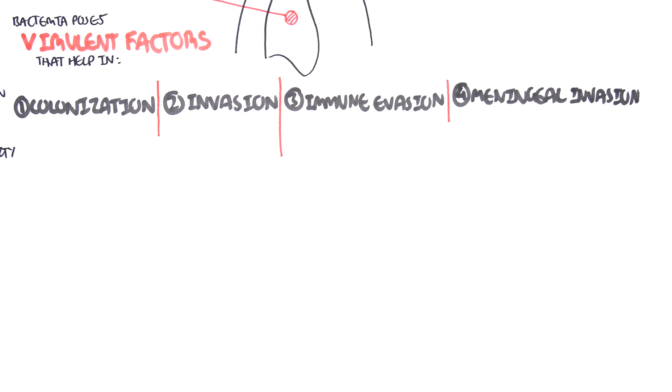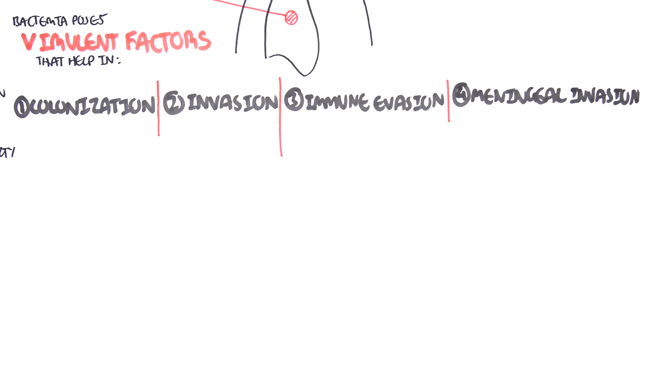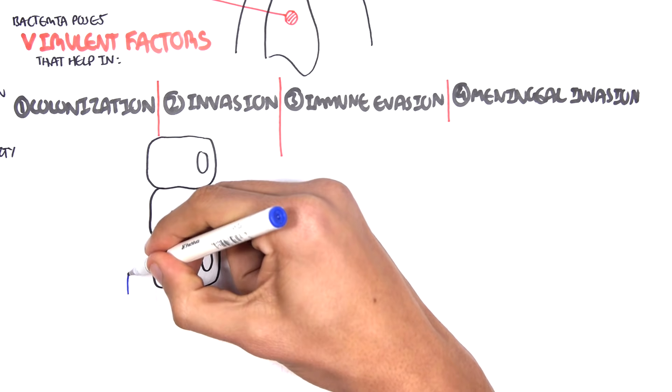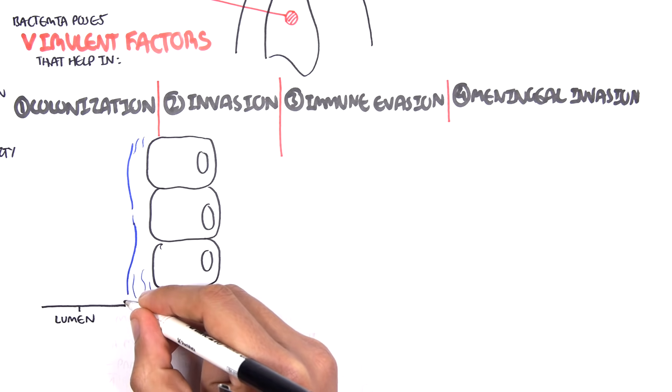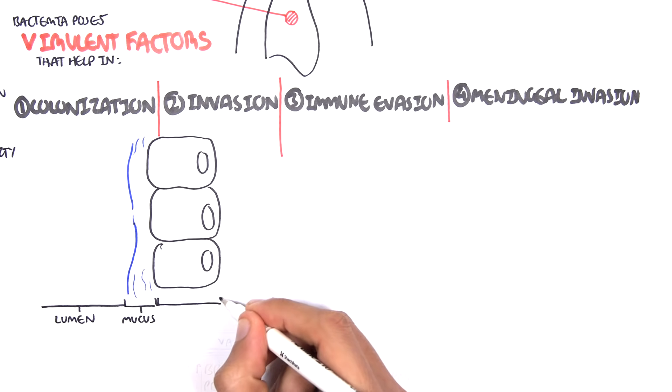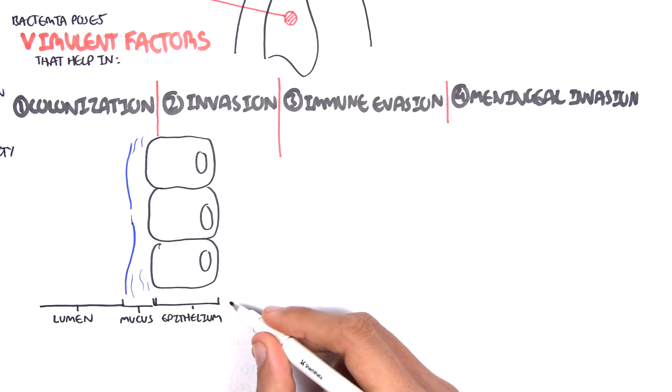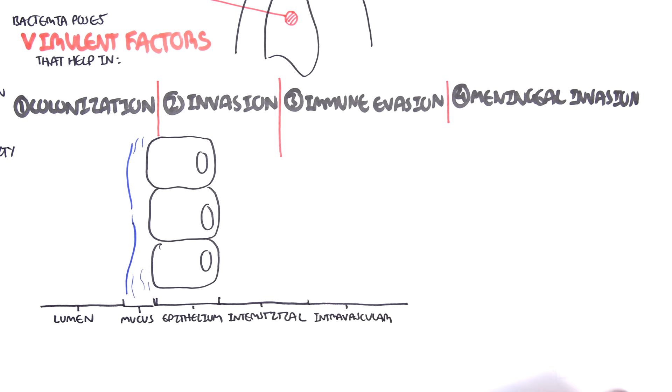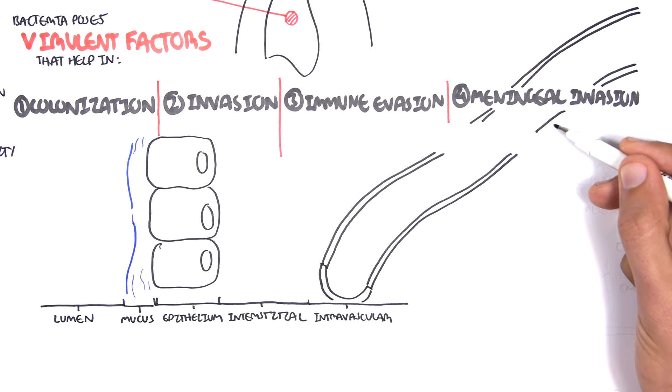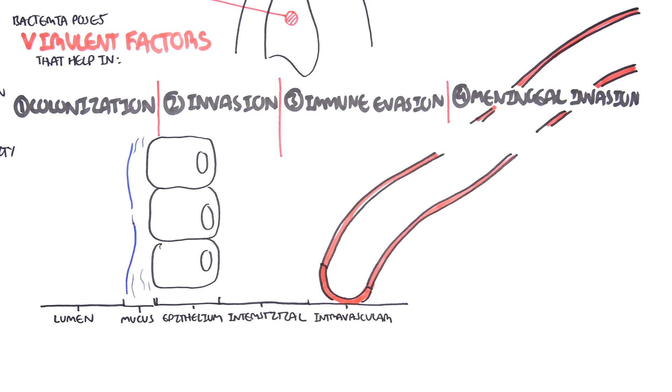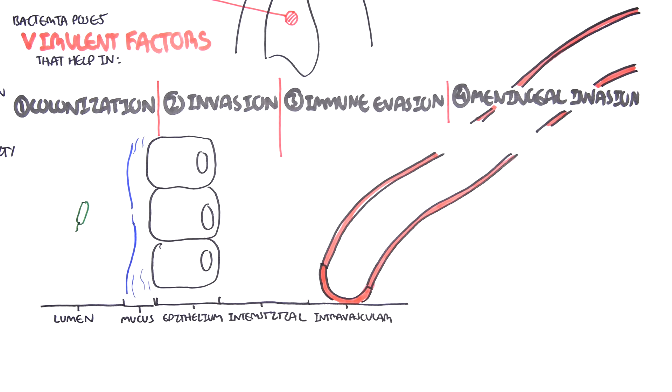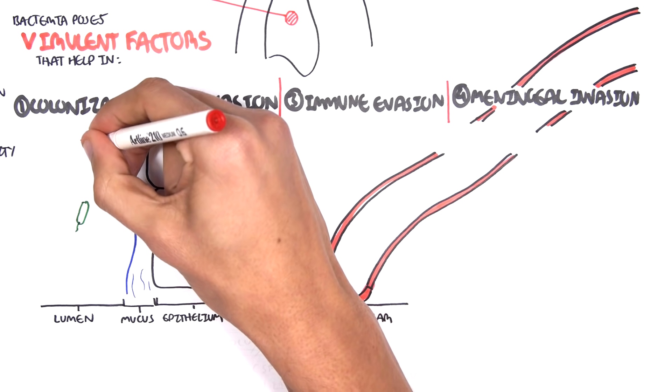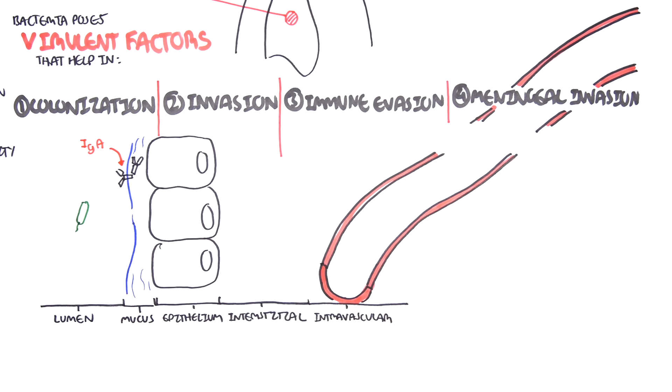In this scenario, we are going to look at the hematogenous spread of the bacteria from the primary source, or from the primary infection. Here is the lumen of the nose, or gut, or the lungs. And here is the mucus, this is the epithelium, and under the epithelium is the interstitial layer, and then you have your capillaries, your blood vessels, which then circulates all around your body. The lumen is obviously an access point for the bacteria. It can be in the ear, the gut, the nose, wherever.